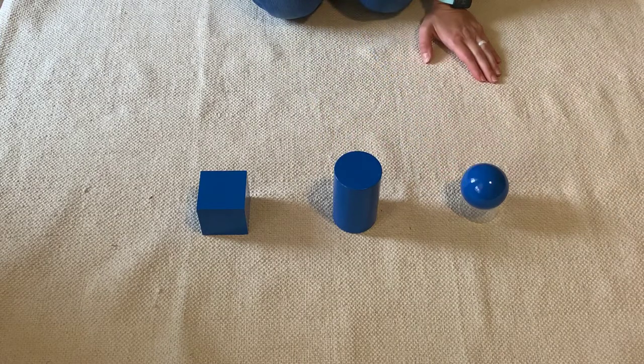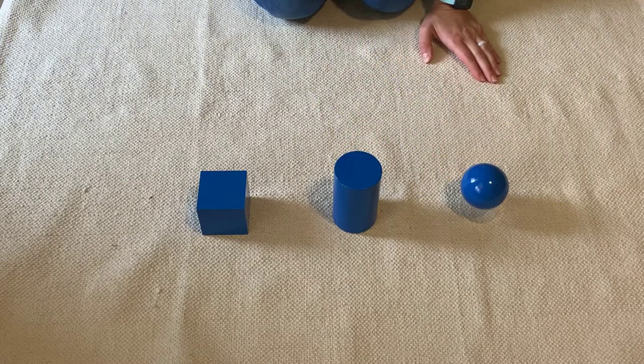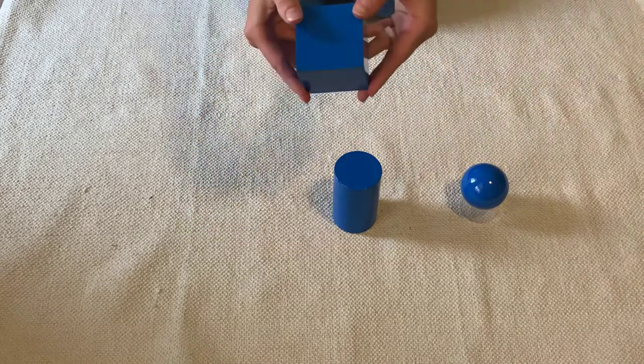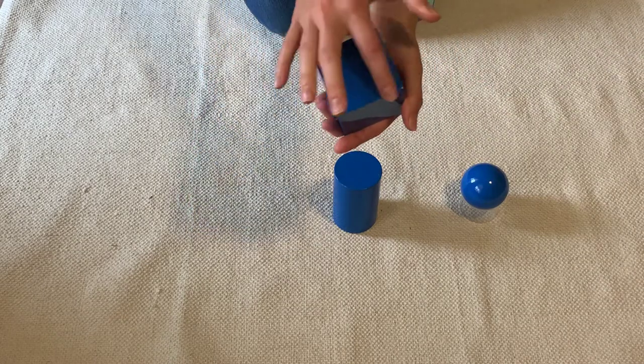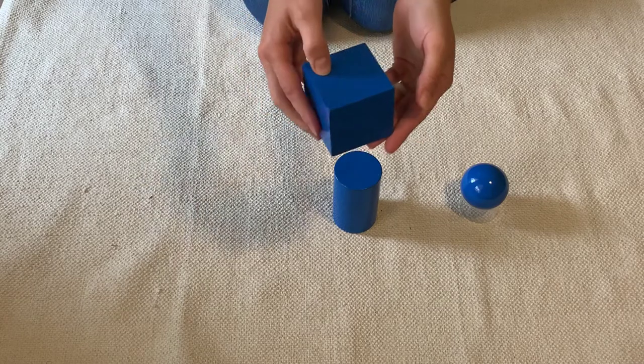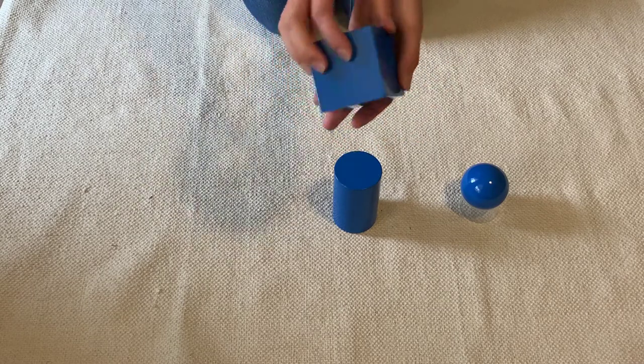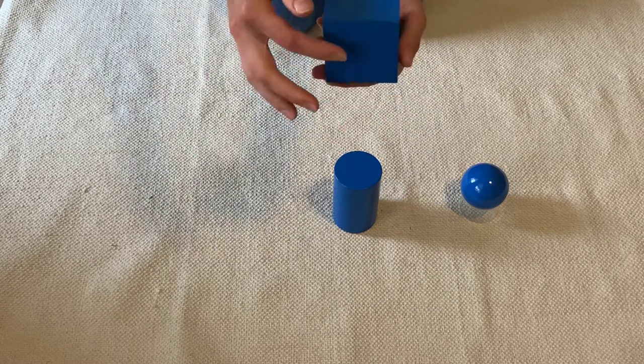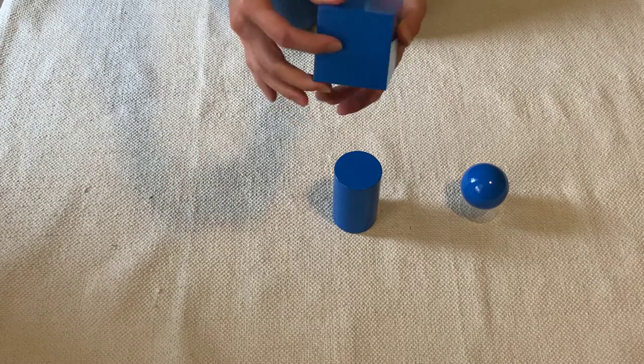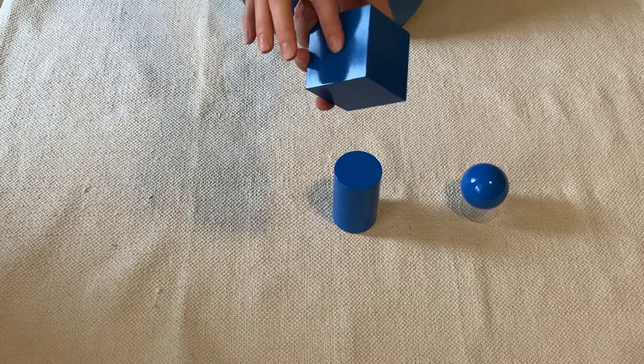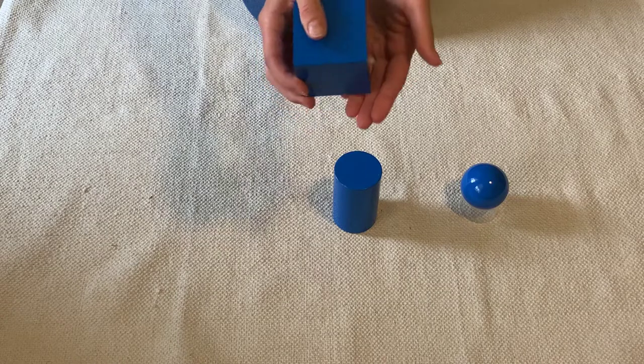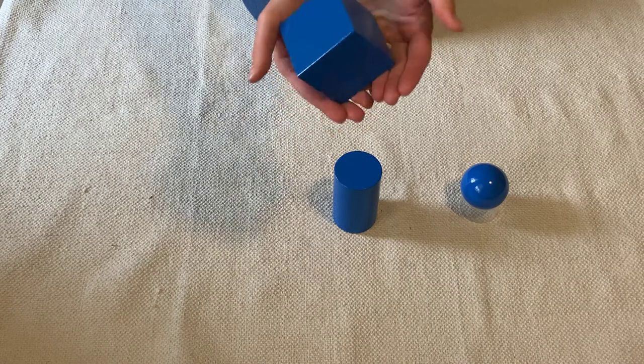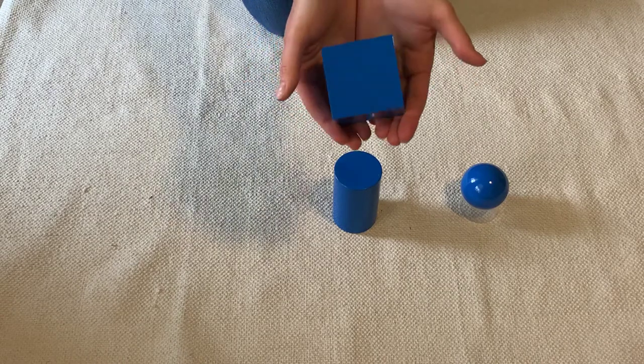Let me tell you a little bit about each of these shapes. So a cube has six sides that are all squares and each side is equal. So look, we have one, two, three, four, five, six. A cube has six square sides that are all equal.